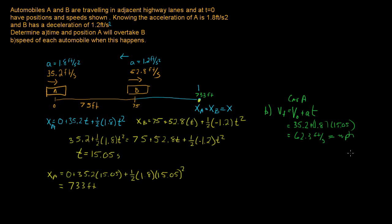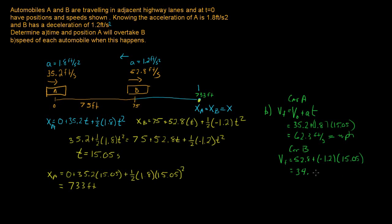For car B, the final velocity equals its initial velocity of 52.8 plus its acceleration, which is negative 1.2 feet per second squared, times 15.05. Solving this gives 34.74 feet per second. So the final answers are: car A is traveling at 62.3 feet per second and car B is traveling at 34.74 feet per second.